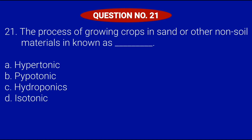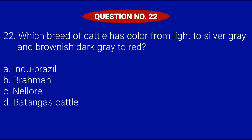Question number 21. The process of growing crops in sand or other non-soil materials is known as: Letter A, Hypertonic; Letter B, Hypotonic; Letter C, Hydroponics; or Letter D, Isotonic. Correct answer is Letter C, Hydroponics.